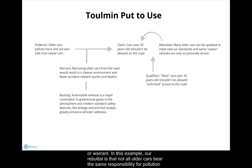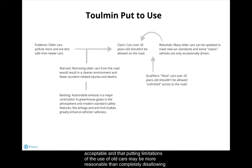In this example, our rebuttal is that not all older cars bear the same responsibility for pollution and danger, so we can qualify our claim to take this rebuttal into account by allowing that some older cars may be acceptable and that putting limitations of use on old cars may be more reasonable than completely disallowing their use.